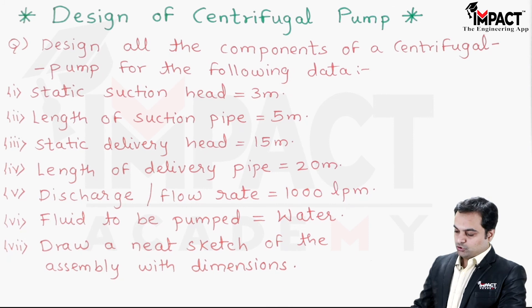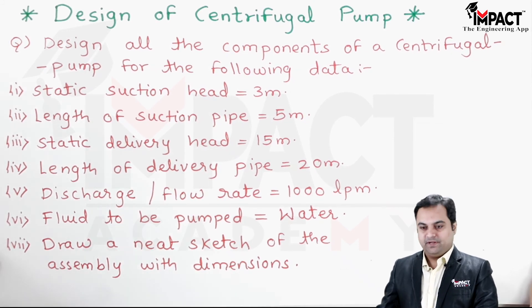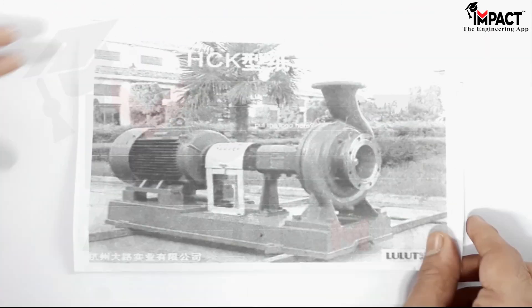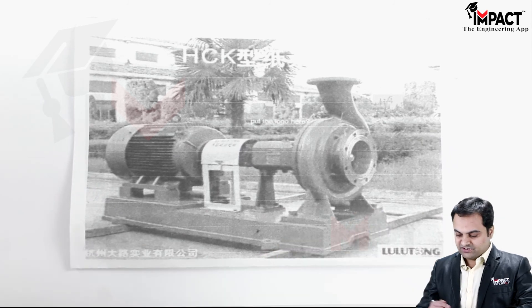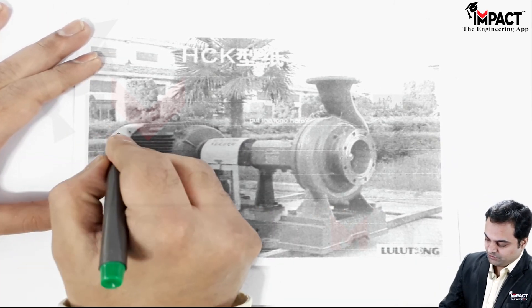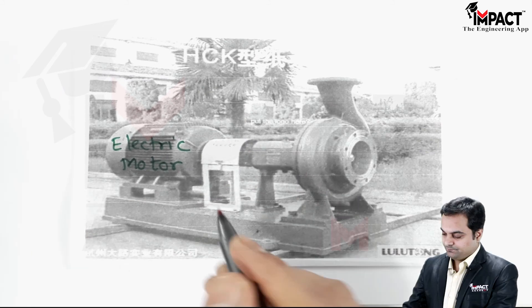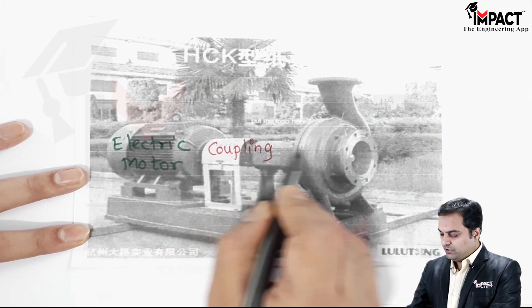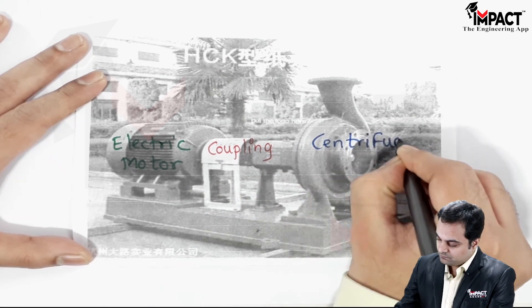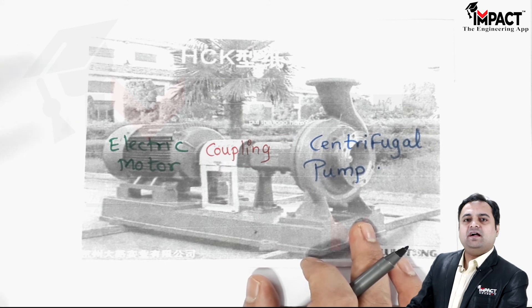To start the solution, I'll first explain the centrifugal pump and then go into the solution. Here is the diagram of a centrifugal pump. The components include an electric motor, and the center portion is the coupling — the motor shaft is directly coupled to the impeller of the centrifugal pump.